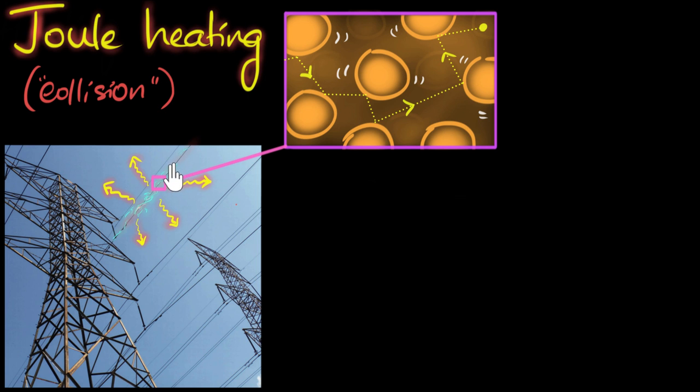So basically, whenever we have an electric current, whenever we have electrons flowing through any material, because of the collision between the electrons and the atoms, the electrons transfer some of their energy to the atoms, making those atoms jiggle, and as a result, the material gets heated up.